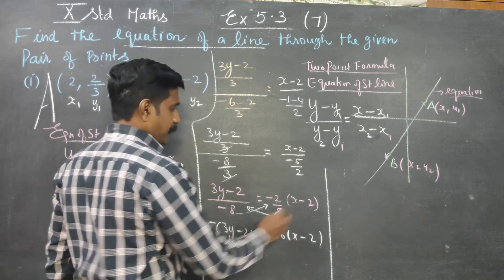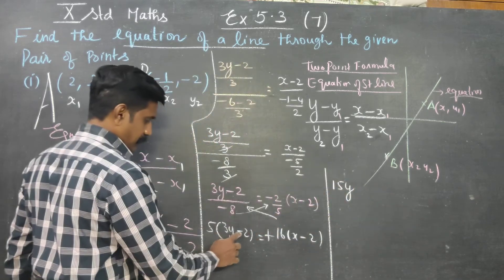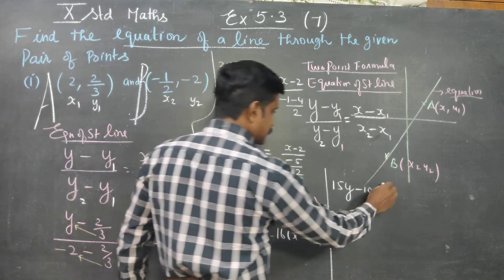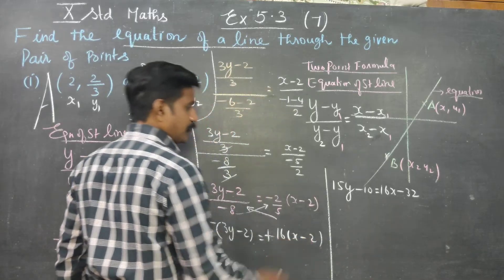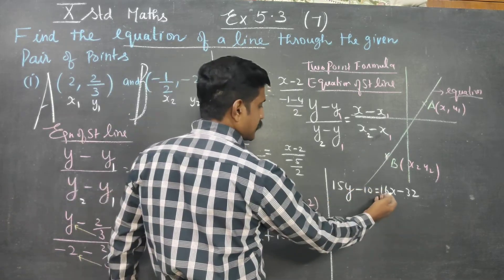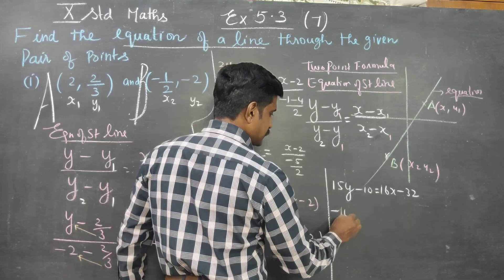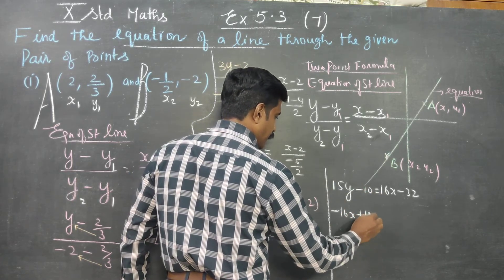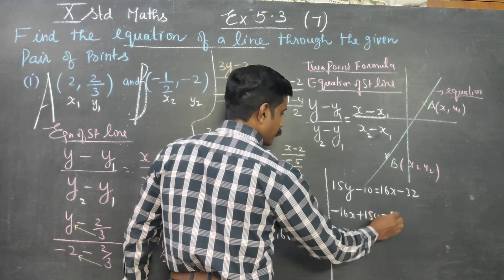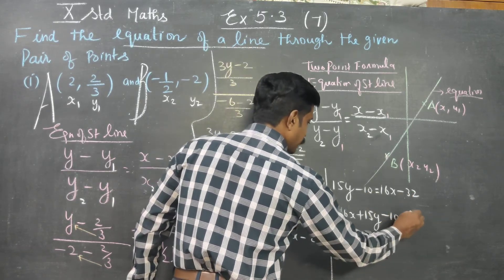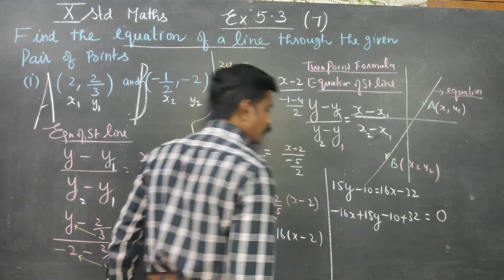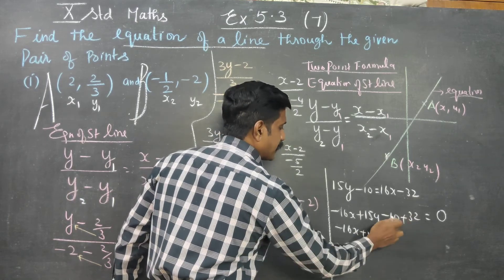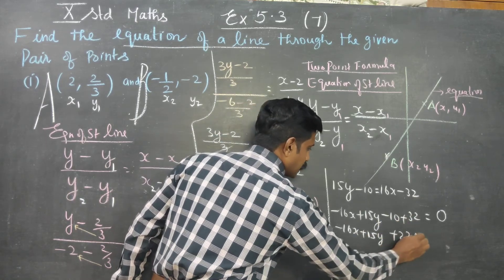5 bracket 3y minus 2 is equal to minus 8, and minus into minus gives plus 8, which is 16 into x minus 2. So 15y minus 10 is equal to 16x minus 32. Bringing all terms to one side: minus 16x plus 15y plus 32 minus 10 equal to 0, giving minus 16x plus 15y plus 32 equals 0.